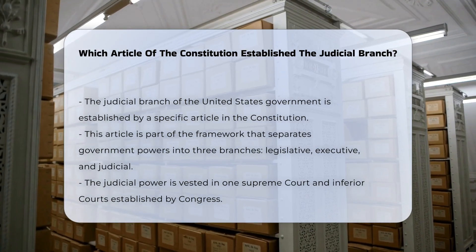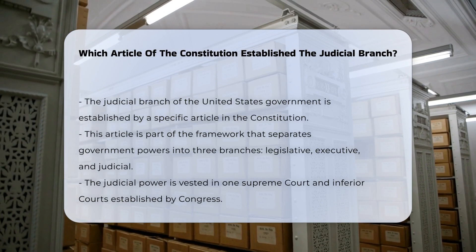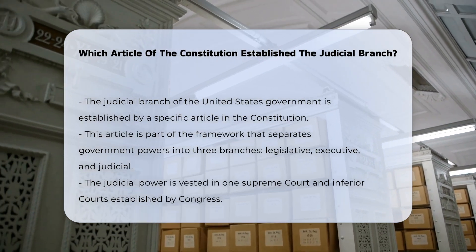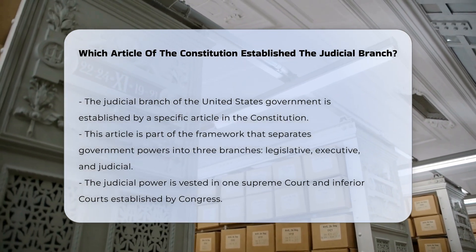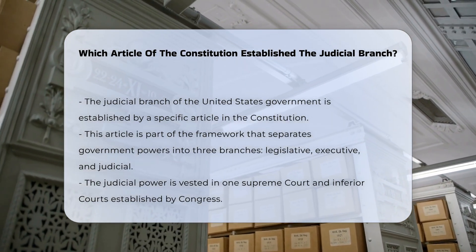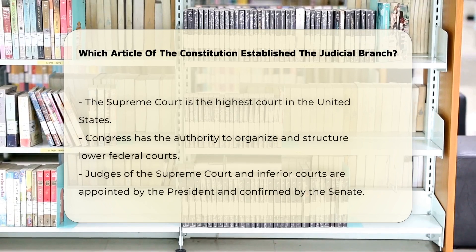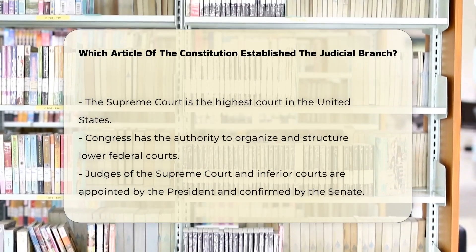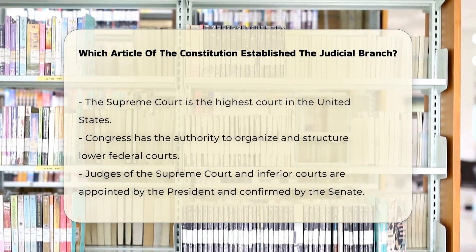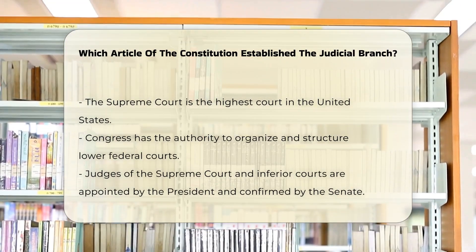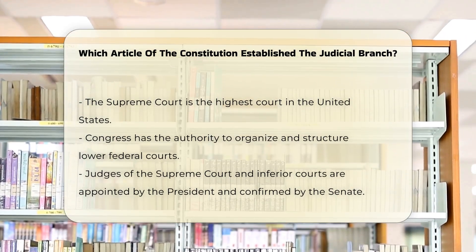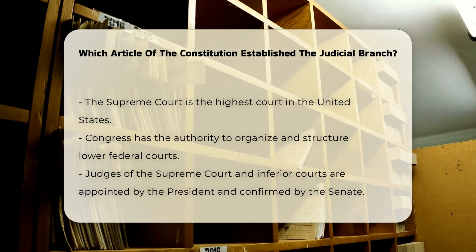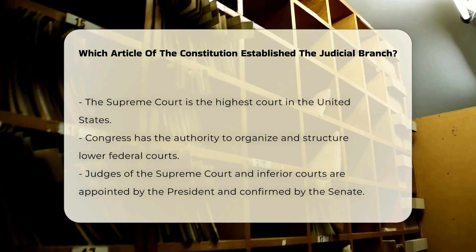The article begins by vesting the judicial power of the United States in one Supreme Court and in such inferior courts as the Congress may from time to time ordain and establish. This provision ensures that the judicial branch is separate from both the legislative and executive branches, with the Supreme Court serving as the highest court in the land.